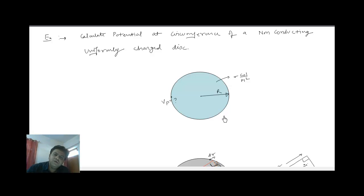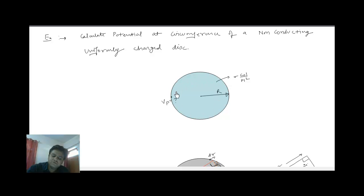Here we are going to talk about the potential at the circumference of a non-conducting uniformly charged disk. We are given a non-conducting disk of radius R having charge spread throughout its complete surface as sigma coulombs per meter square. Due to all these charges uniformly spread over its surface, we are required to find the potential at this point.